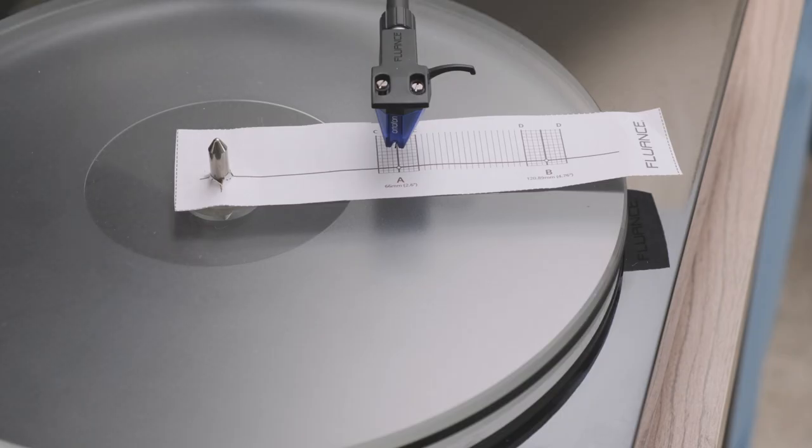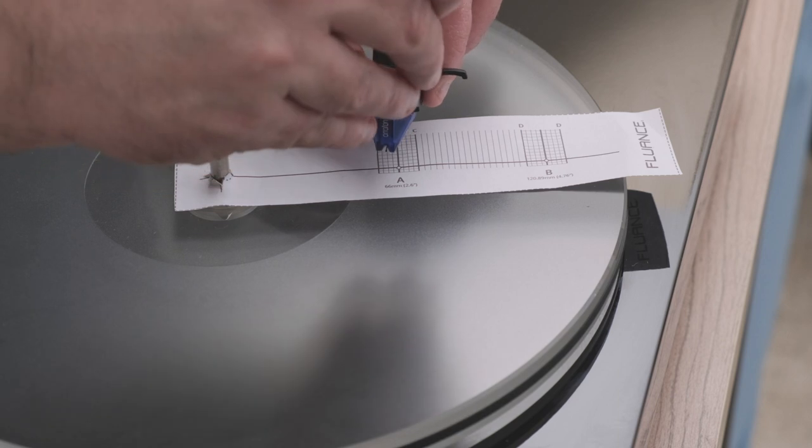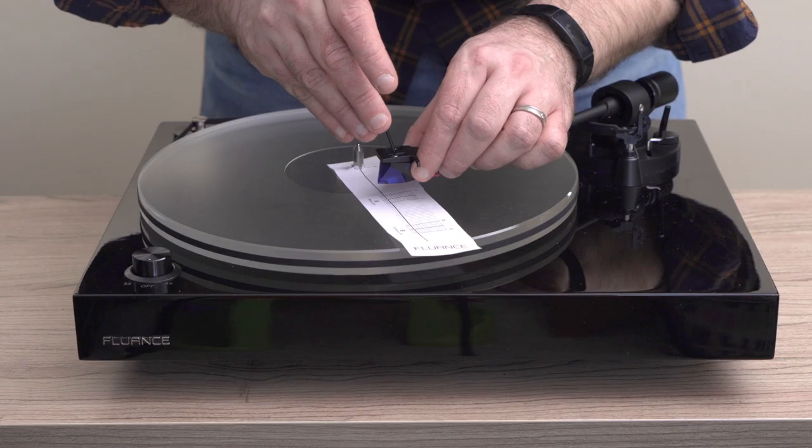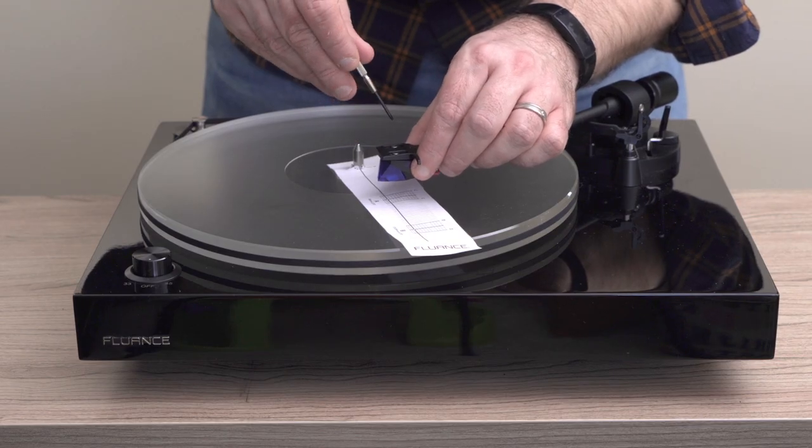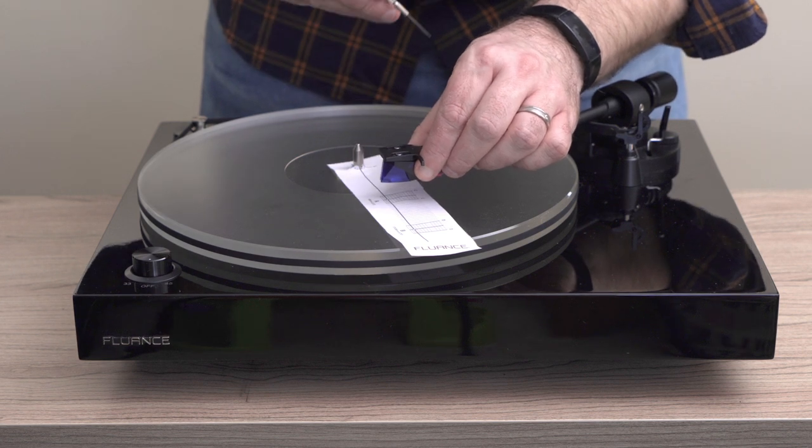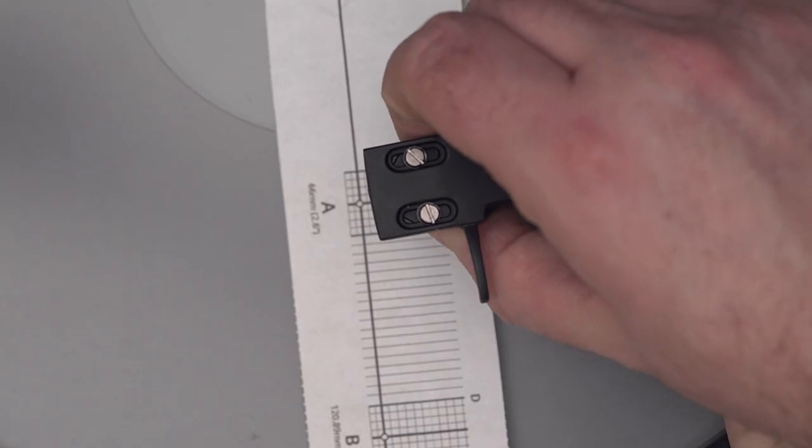If your stylus is not aligned, you will need to realign it. Use a flathead screwdriver to loosen the screws. Rotate the cartridge until the lines are parallel.